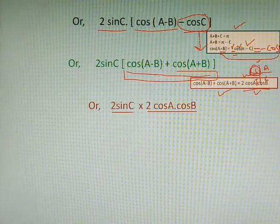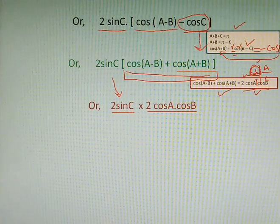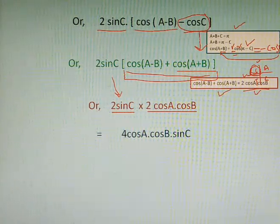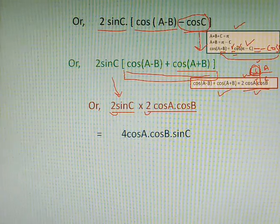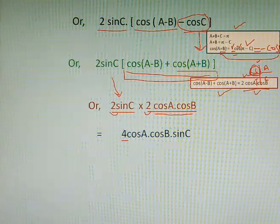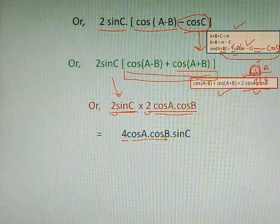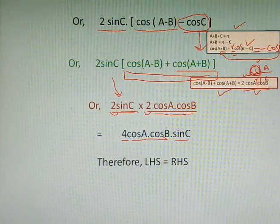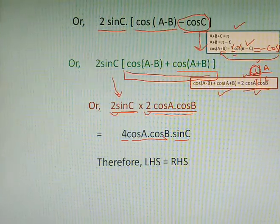Now in the next step, multiplying this 2 and this 2, the product will be 4. And cosA and cosB will come from the second part, and sinC from the first part. And this is what we want on the right side. Hence LHS equals RHS. Proved.